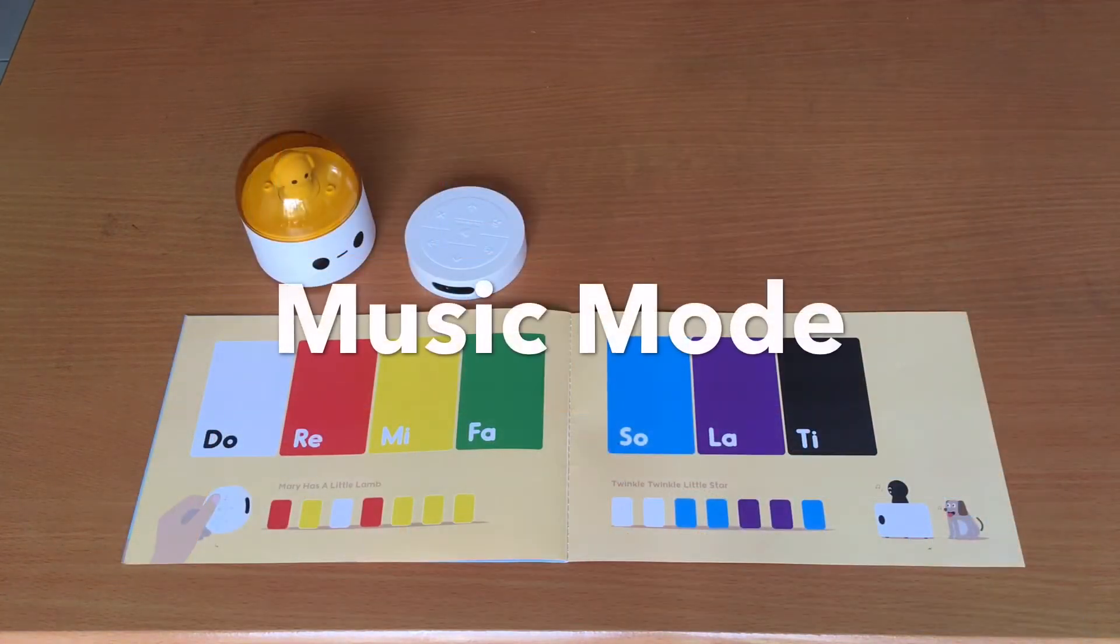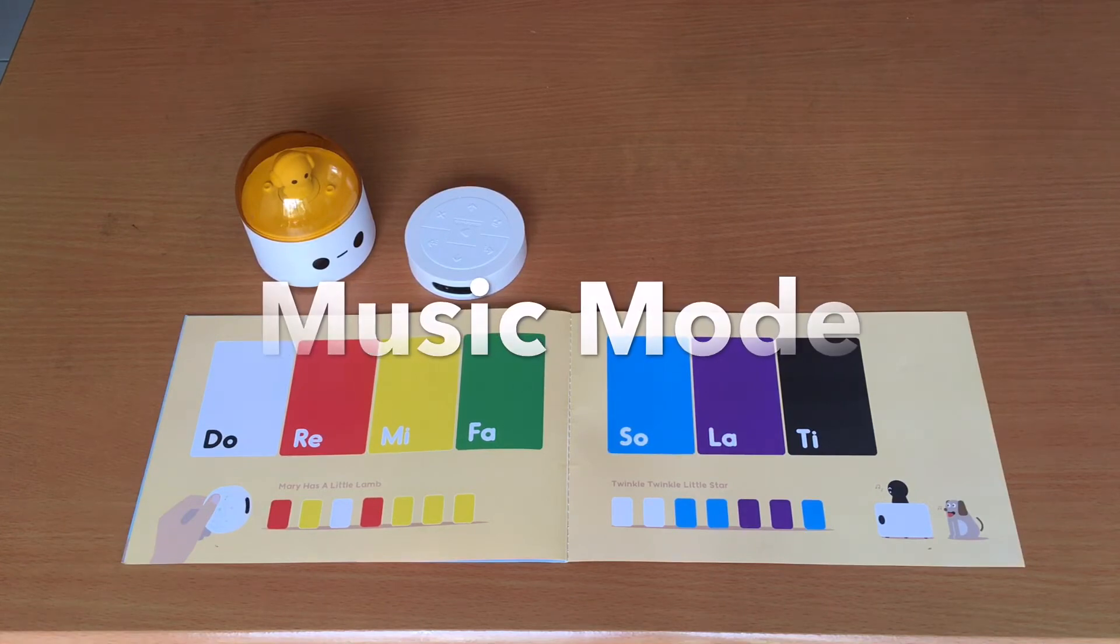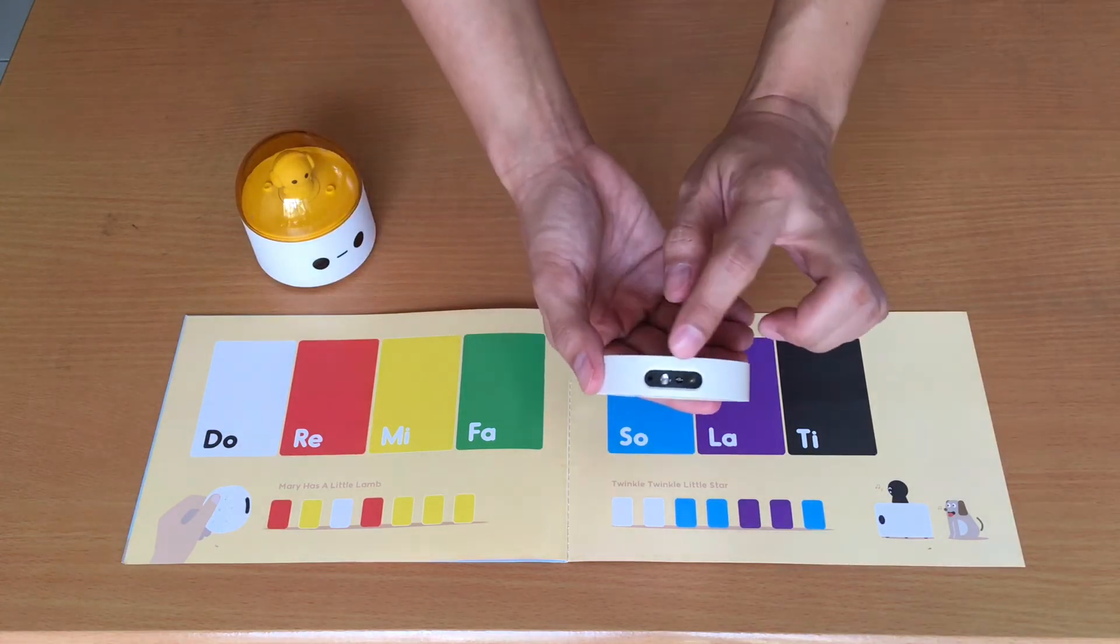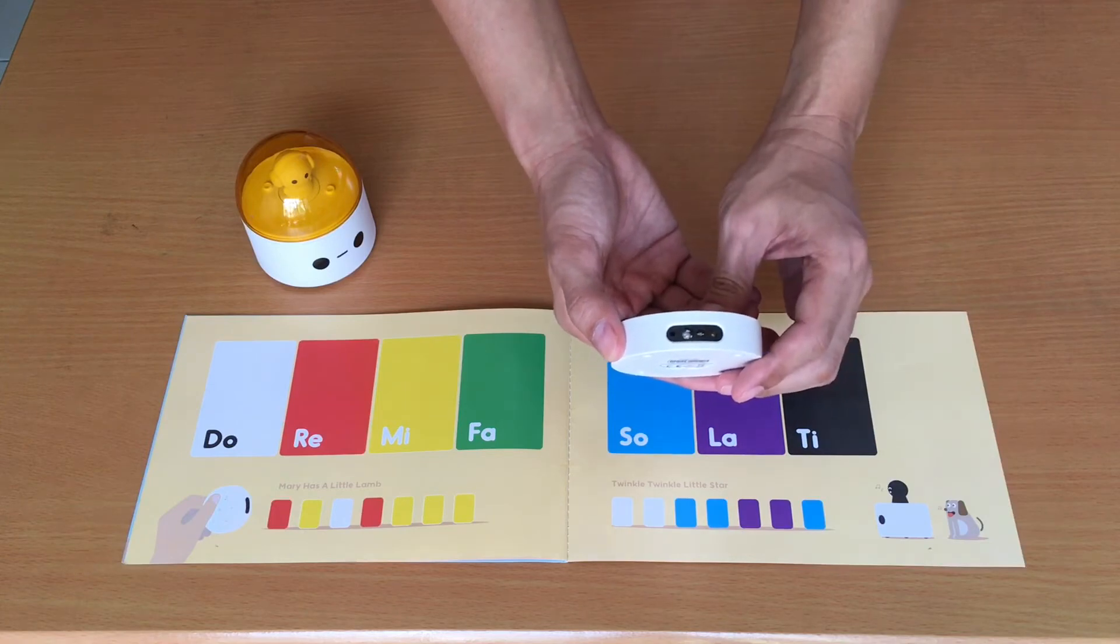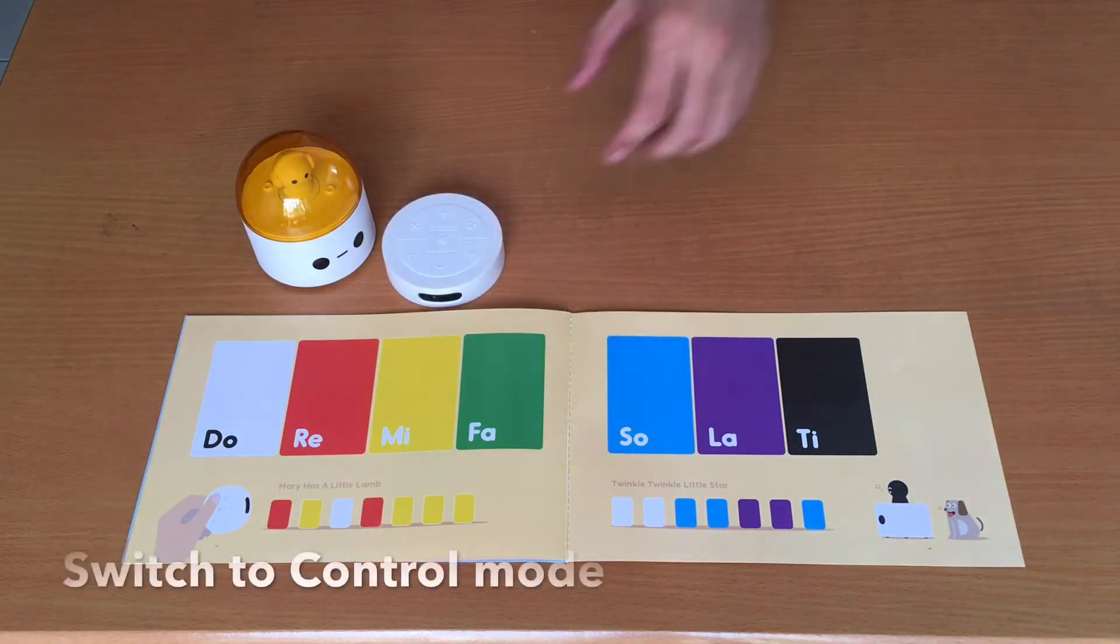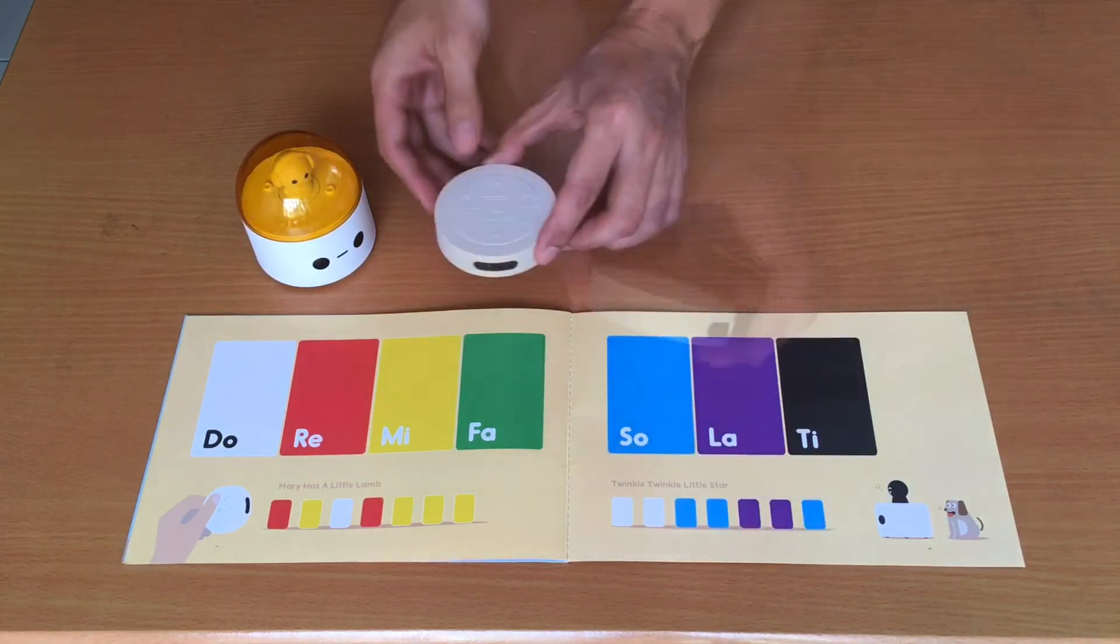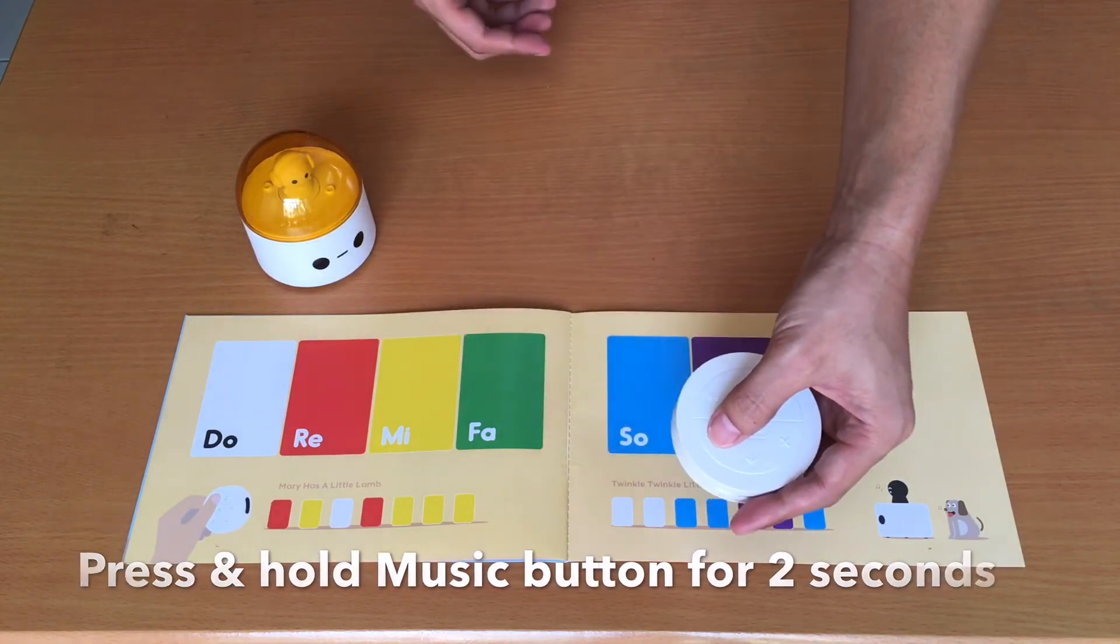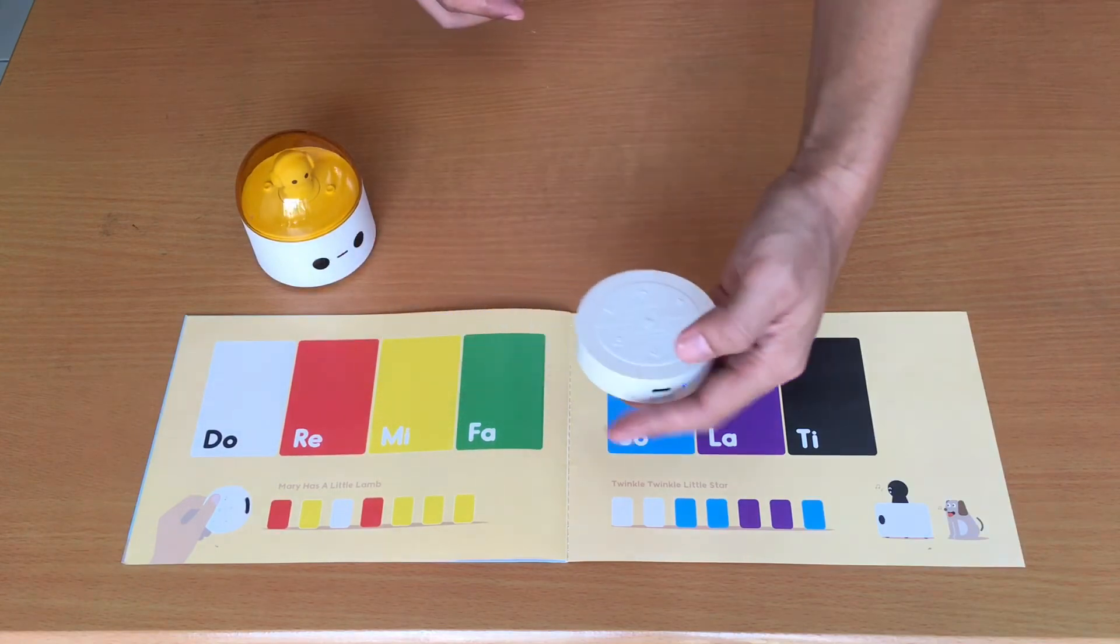Another cool feature of the Matatalab Lite is the ability to play a musical note by color. It has a sensor that detects colors and plays a musical note on each color. So to enter the music mode, make sure that it is on the control mode and press the music button for 2 seconds and point the sensor directly on the colors.